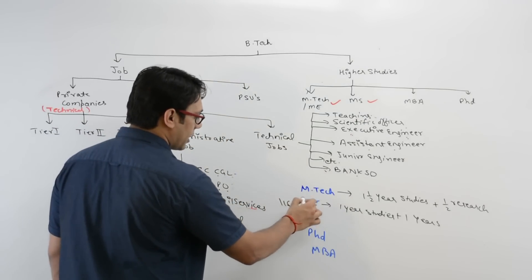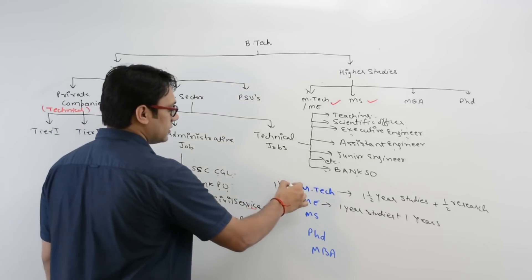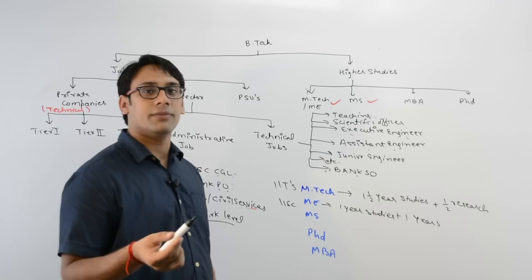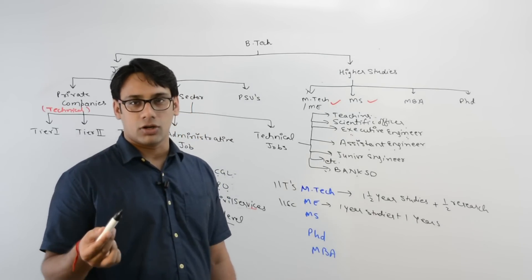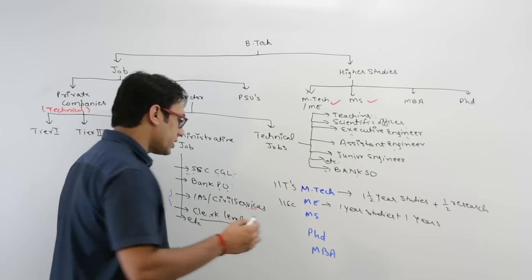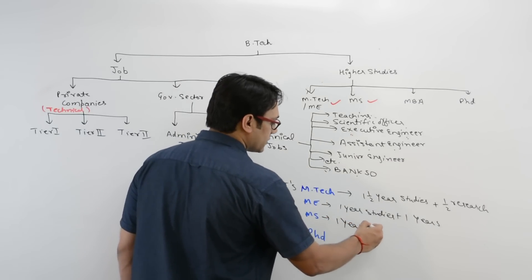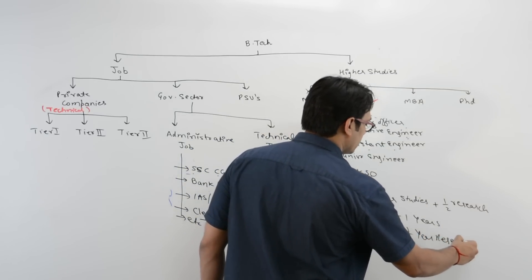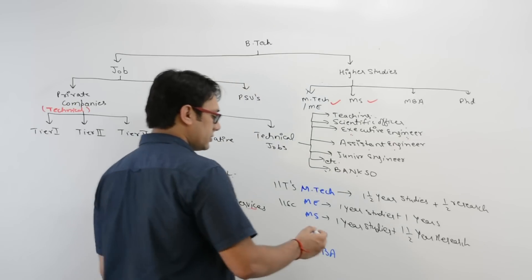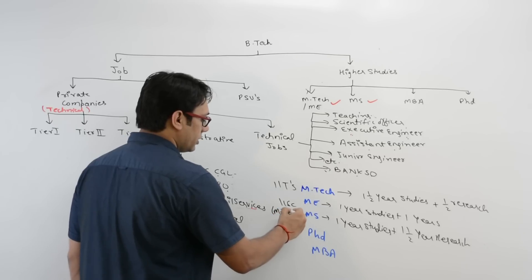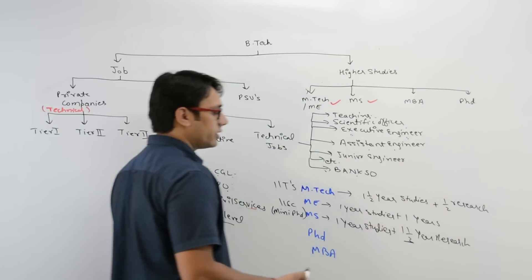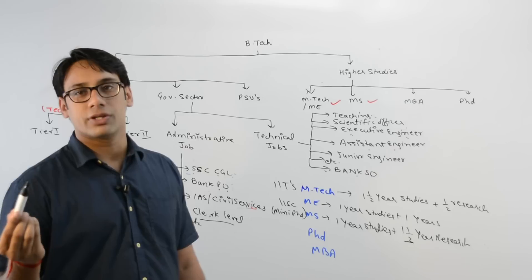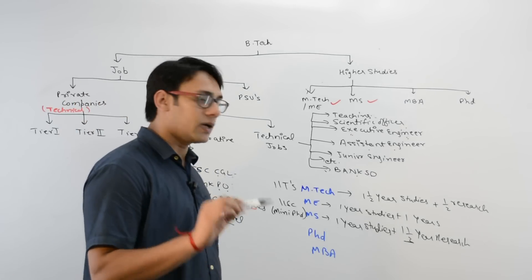IISc Bangalore offers the ME program while IITs generally offer M.Tech. ME focuses on core subjects only, while M.Tech may include subjects more oriented towards jobs. In case of MS, you will have one year of studies plus one and a half years of research. MS is also called a mini PhD, and the research time can increase — it may take up to two years.